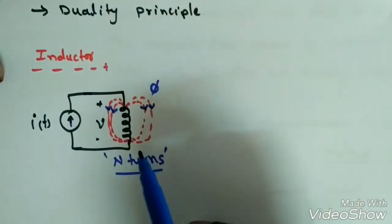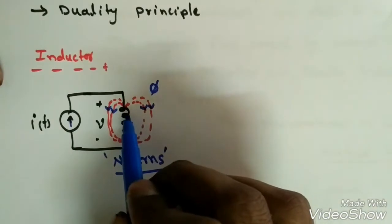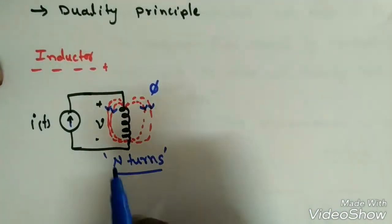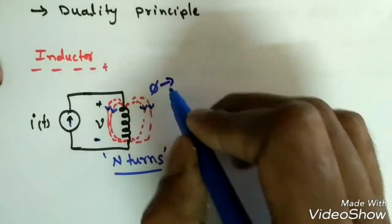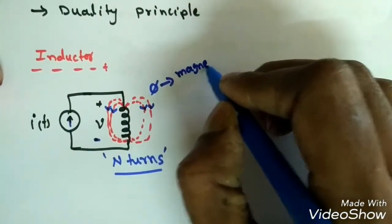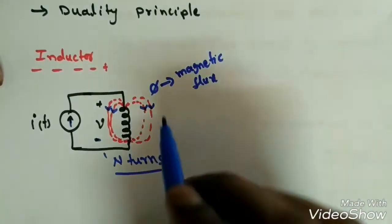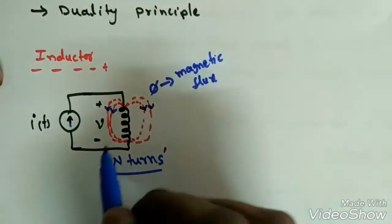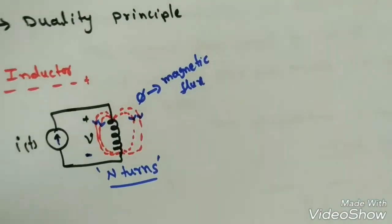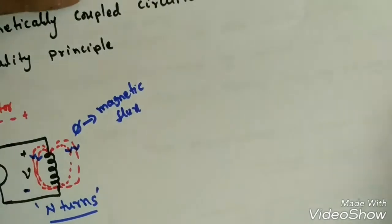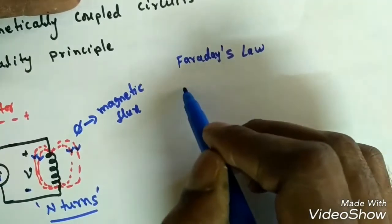To understand magnetically coupled circuits, we first recall the inductance concept. If a coil has N turns and a time-varying current flows through it, a magnetic flux will be generated across this coil. Due to this magnetic flux, a voltage is induced in the coil.